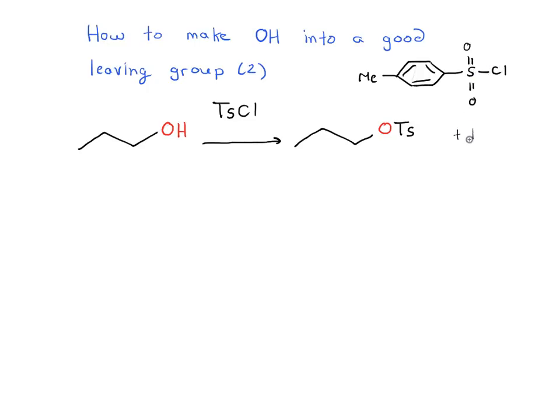And this oxygen attacks the sulfur of tosyl chloride and displaces Cl. It actually also forms an equivalent of HCl when we do this reaction. But the important thing here is that we've gone from an OH, which is a poor leaving group, to now an OTs, which is actually a great LG, great leaving group.